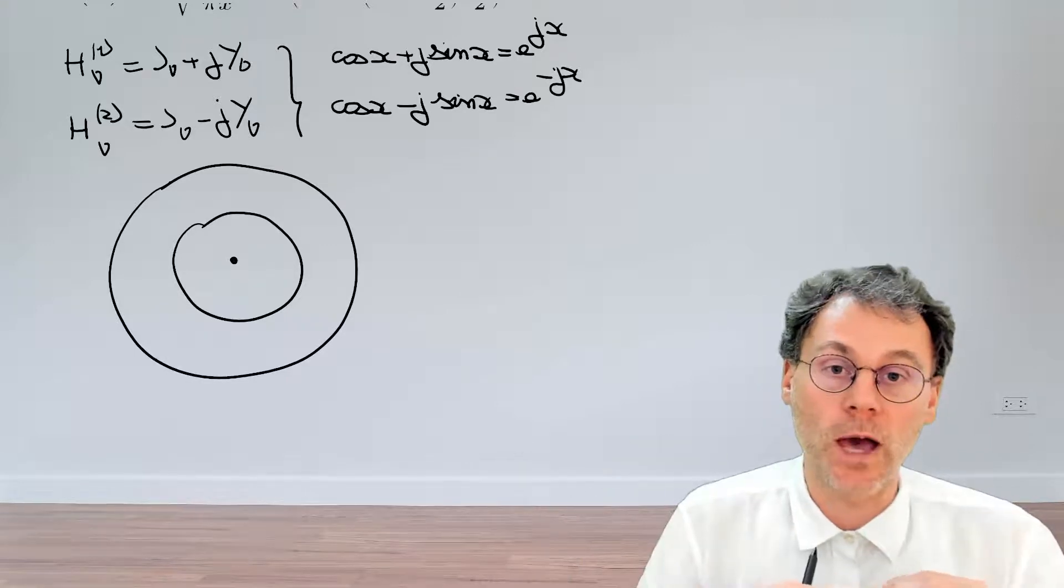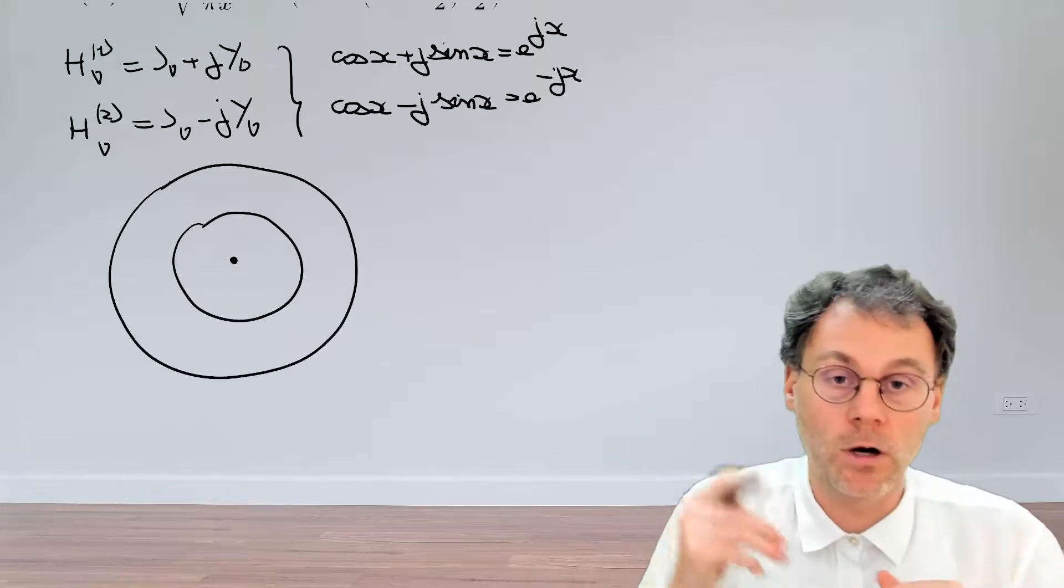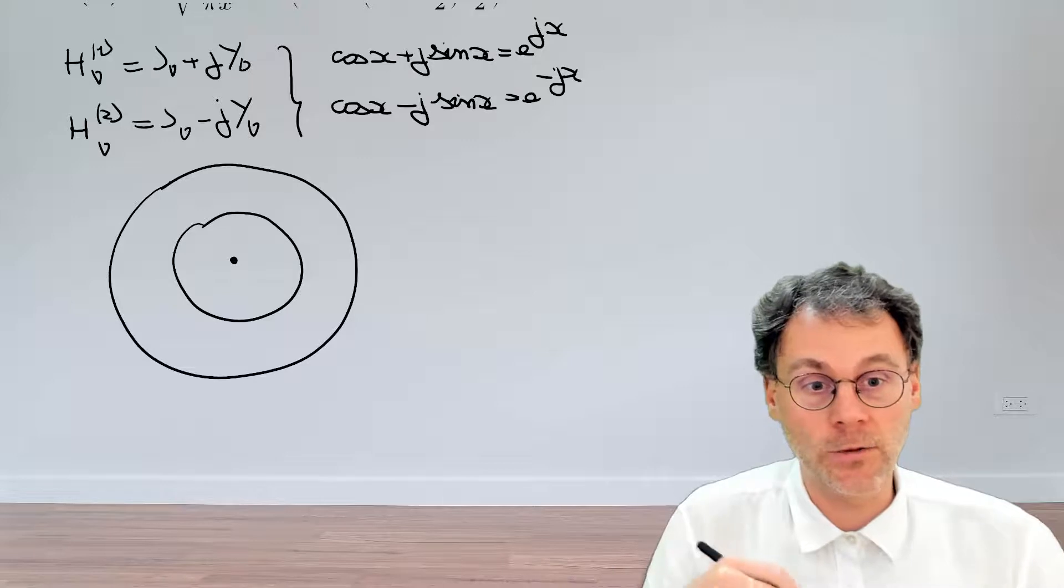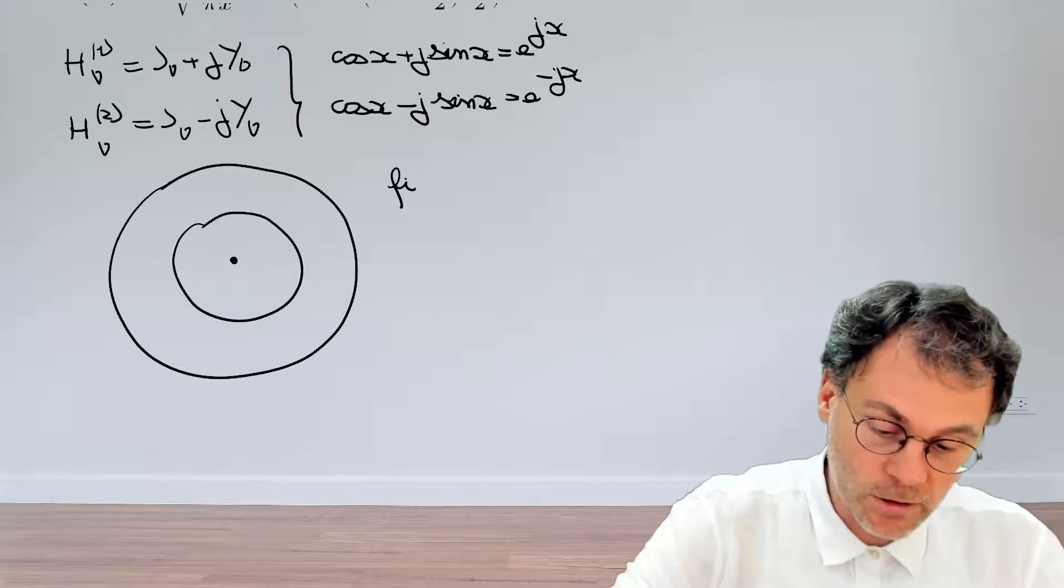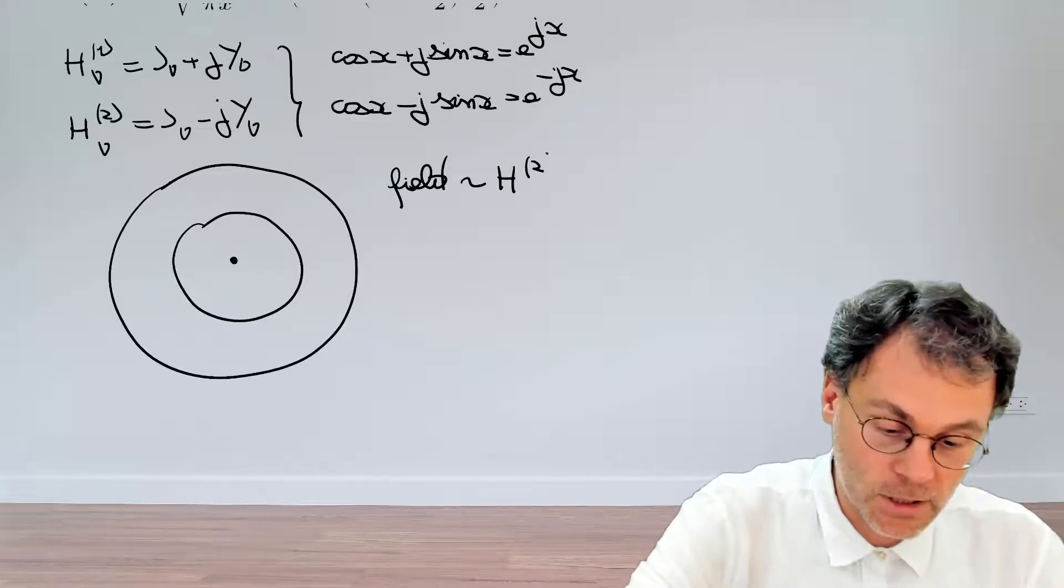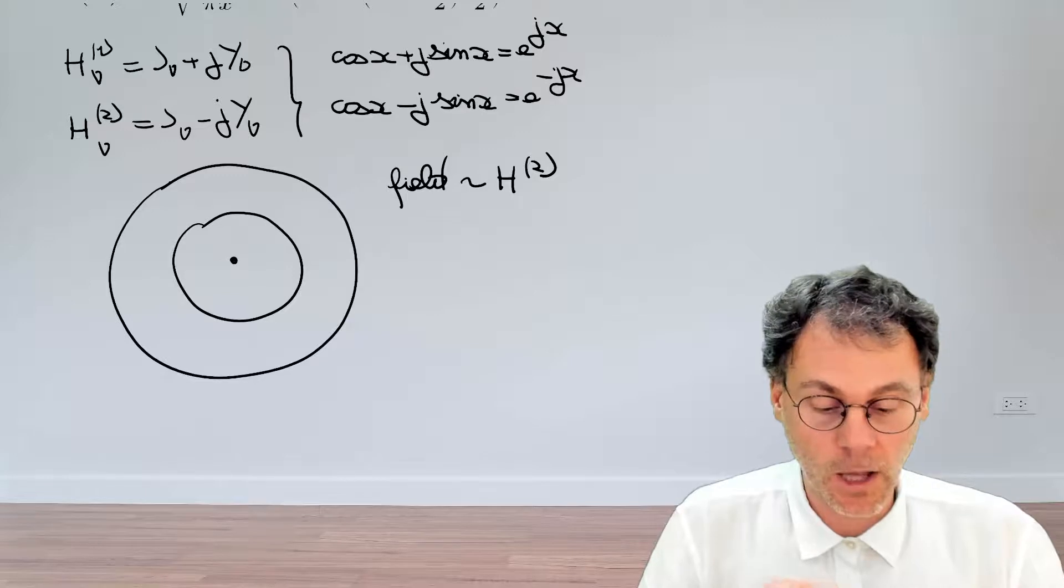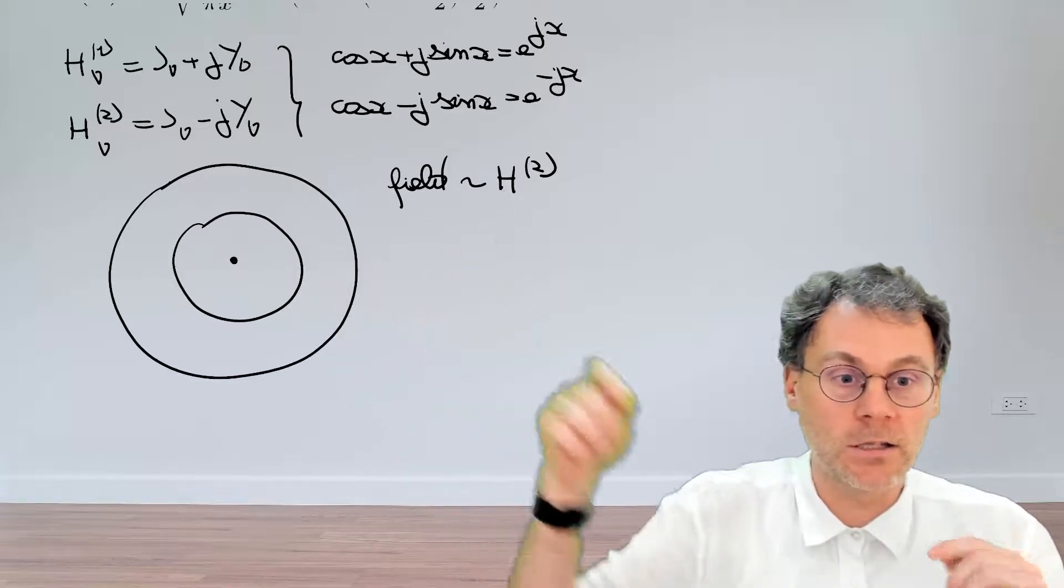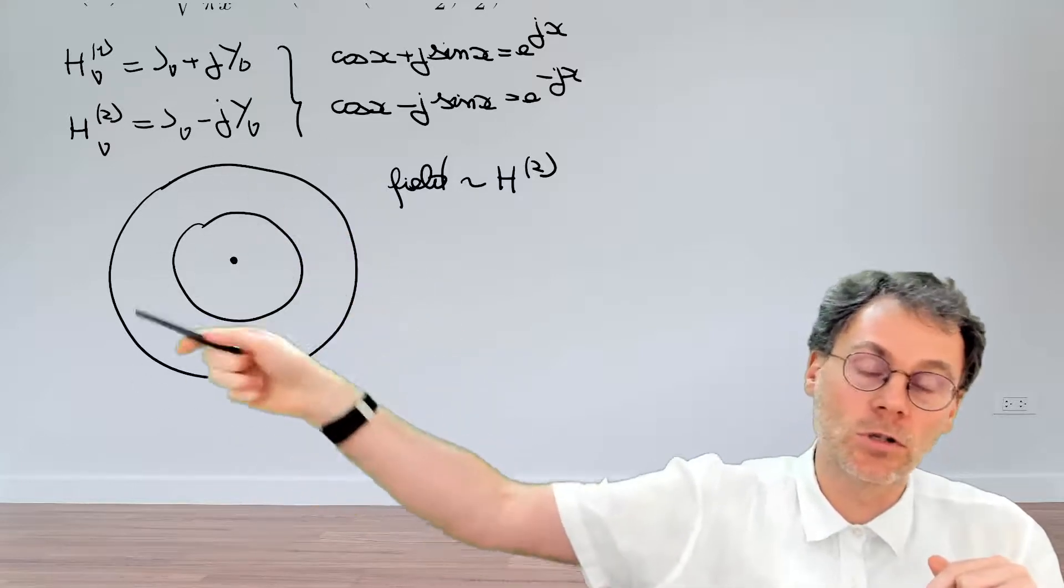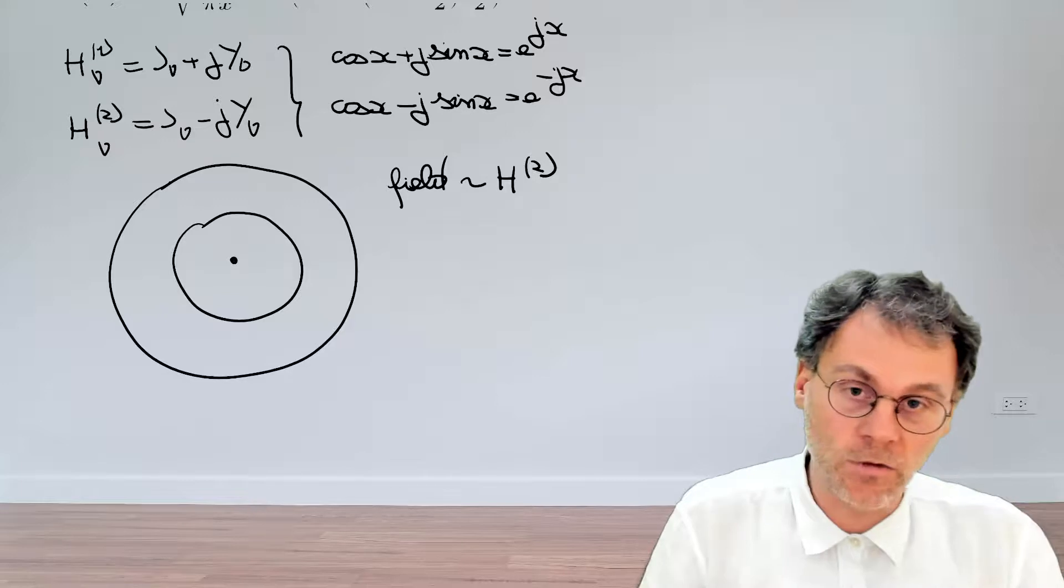But we can go one step further and actually calculate how our intensity should go down, just by making use of what we know from solving Maxwell's equations. We know that the fields, either electric or magnetic, will be proportional to a Henkel function. And in this case, a Henkel function of the second kind, because we have an outgoing wave here that's being radiated towards infinity. So our field scales as the Henkel function. Can we now calculate roughly the total energy that flows through this cylinder here? Well, obviously, that's going to be proportional to this field squared.